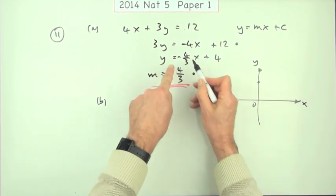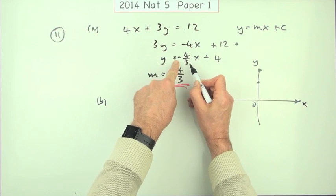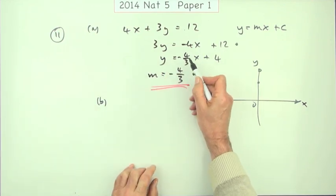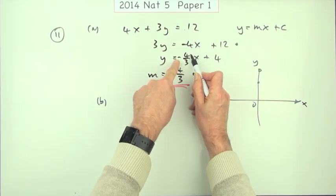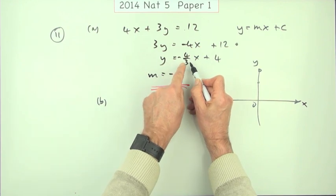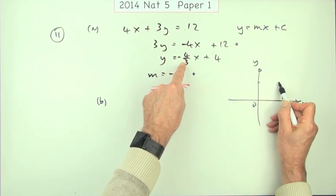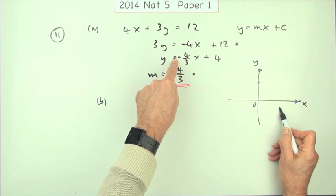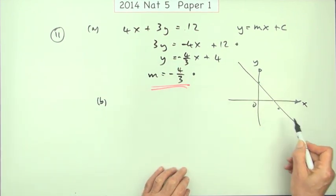So this line, this tells you exactly what it looks like. It cuts at 4 and it's got a gradient of negative 4 upon 3. Now you can interpret that two ways. You could do just what it says, distance up over distance along, which means for 3 along, you go down 4. So the line would look like this.